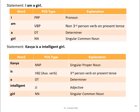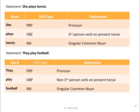In 'She plays tennis': 'she' is pronoun (PRP); 'plays' is VBZ (third-person verb in present tense); 'tennis' is a noun. In 'They play football': 'they' belongs to the pronoun category; 'play' is VBP (non-third-person verb in present tense); 'football' is again a singular common noun (NN).